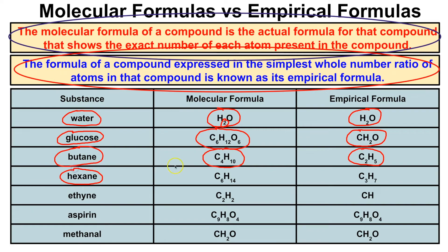For hexane, the molecular formula is C6H14. We can factor out a two from each subscript, giving us C3H7 as its empirical formula. For ethyne, the molecular formula is C2H2, and if we factor out a two from each subscript, we end up with simply CH as its empirical formula.